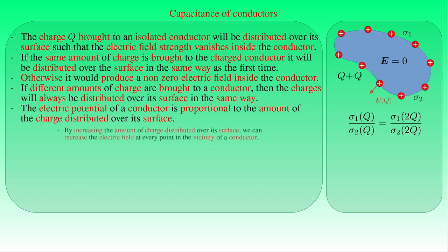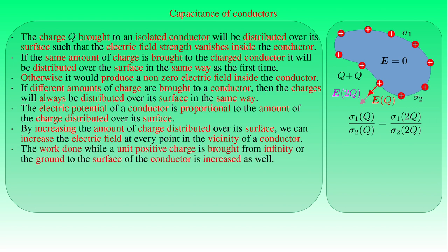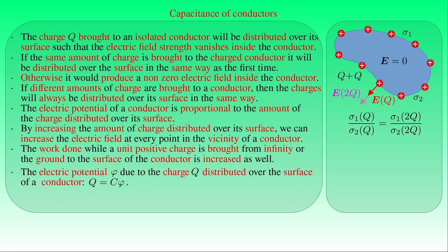Indeed, by increasing the amount of charge distributed over its surface, we can increase the electric field strength at every point in the vicinity of the conductor. Then the work done while a unit positive point charge is brought from infinity or the ground to the surface of the conductor — that is, the electric potential due to the charge distributed over the surface — is increased as well. This finding can be formulated by stating that the amount of charge Q on the conductor must be directly proportional to the electric potential φ of the conductor, where the proportionality constant C is called the electric capacitance of the conductor.